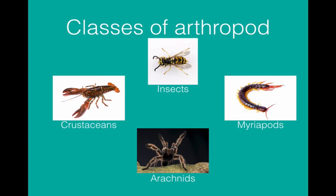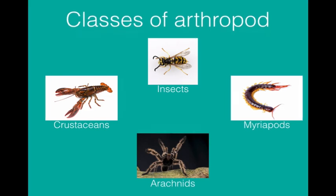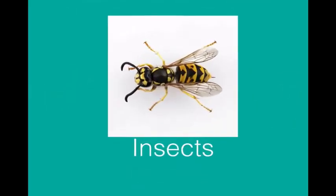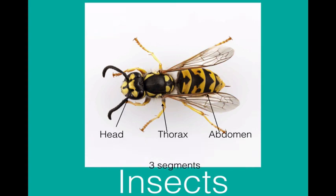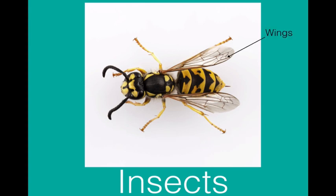You need to know some details about the different classes of arthropods, and we will look at insects first. Insects can be identified by the fact that they have three body segments: a head, a thorax, and an abdomen. In this wasp it is fairly obvious where the three segments are, though sometimes it is harder to see. Insects have wings, or at least some members of the species have wings — for example, male drone ants.